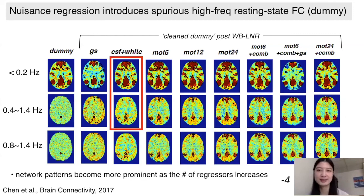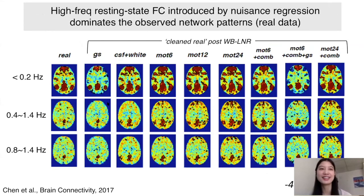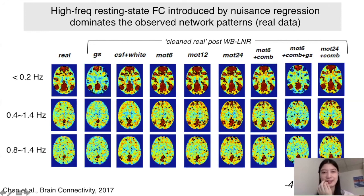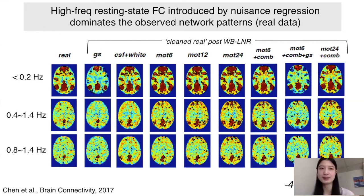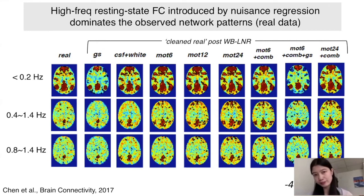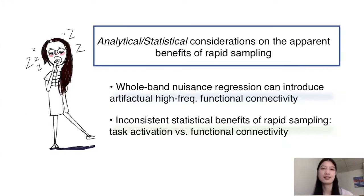In real data, prior to nuisance regression there are minimal identifiable high-frequency connectivity patterns. Post nuisance regression, you see much cleaner default mode network patterns in higher frequency bands, but these are likely artifactually introduced by nuisance regression. The recommendation: if you are interested in high-frequency connectivity, instead of doing whole-band nuisance regression — which introduces cross-talk between frequencies — you should filter both your data and regressors to the band of interest and perform nuisance regression within each specific band.